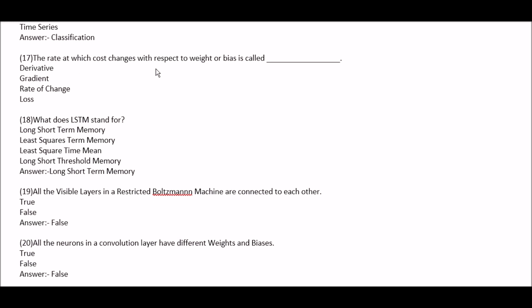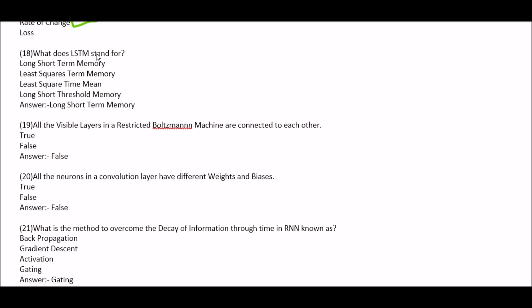The rate at which cost changes with respect to weight or bias is called — option A: derivative. Option B: gradient. Option C: rate of change. Option D: loss. Right answer is option C, rate of change. Next question: what does LSTM stand for? Option A: long short-term memory. Option B: least squares term memory. Option C: least squares time mean. Option D: long short threshold memory. Right answer is option A, long short-term memory.